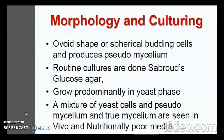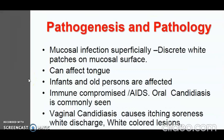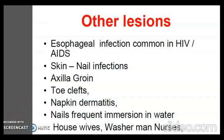Candida albicans is an ovoid or spherical budding cell which produces pseudomycelia both in culture and in tissue. Routine cultures are done on Sabouraud glucose agar and grow predominantly in the yeast phase. A mixture of yeast cells, pseudomycelium and true mycelium are seen in vivo and on nutritionally poor media. When infected, discrete white patches can be seen on the mucosal surface affecting the tongue. Infants and older persons are most affected. Immunocompromised individuals are more susceptible. Vaginal candidiasis causes itching, soreness, white discharge and white lesions. Esophageal, skin and nail infections also occur in the axilla, groin, toe clefts, and as napkin dermatitis. Nail infections are also seen in housewives, washermen, and nurses due to frequent immersion in water.